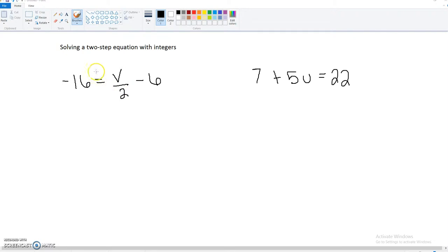The first example, we're going to add 6 to both sides. Okay, so on this side we've got negative 10. And we're going to bring down our v divided by 2 because this is canceled. Again, remember, our goal is to solve for v.